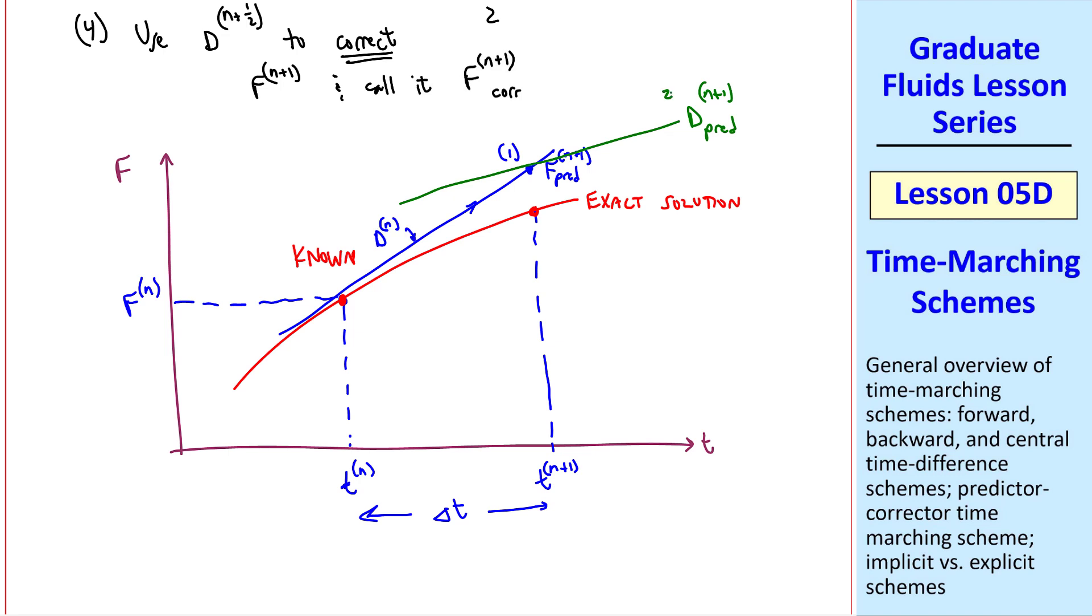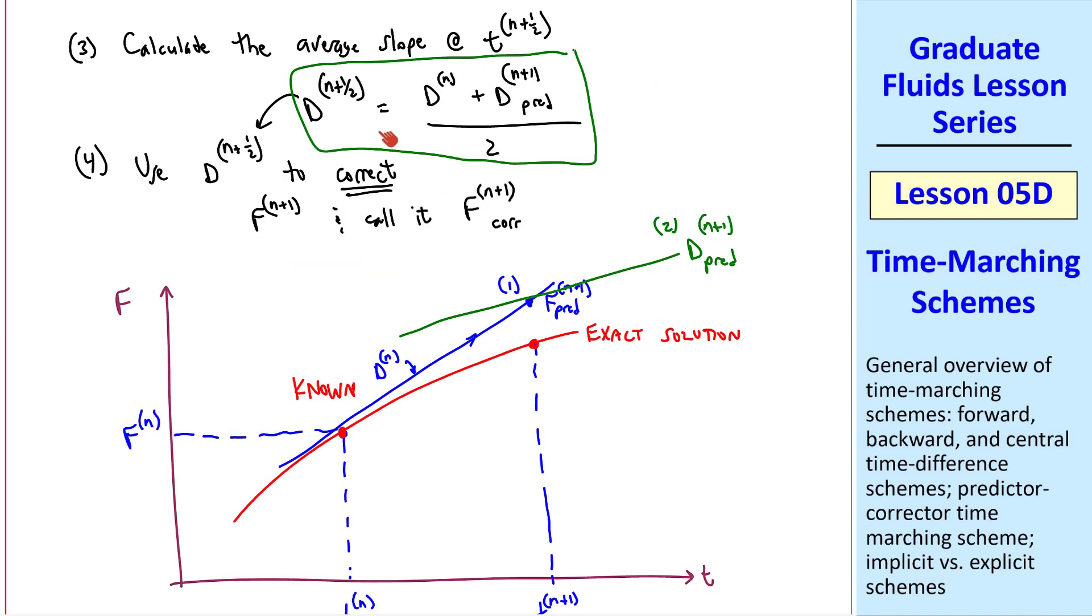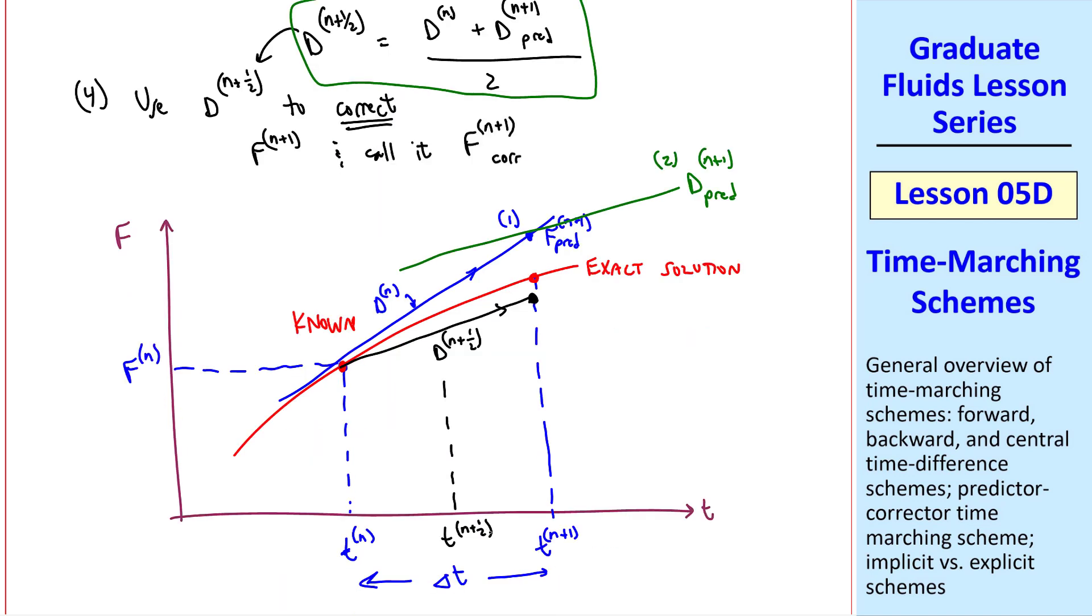Let's call this first derivative here dn, and we'll call this slope 2. Step 3 is to calculate the average of these two slopes, dn and dn plus 1 predicted. Finally, we use that slope, dn plus 1 half, which is this time, and this slope comes from step 3, and we extrapolate that slope to the corrected fn plus 1. This is our final step 4.